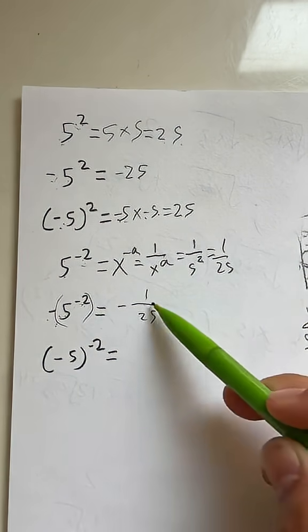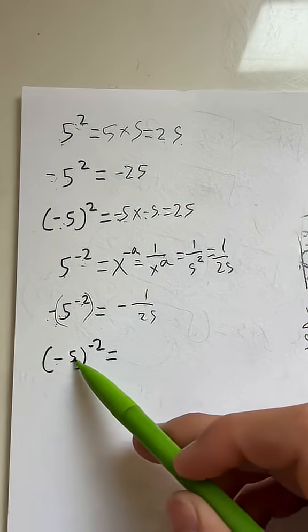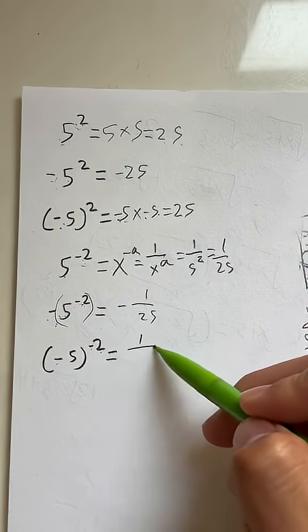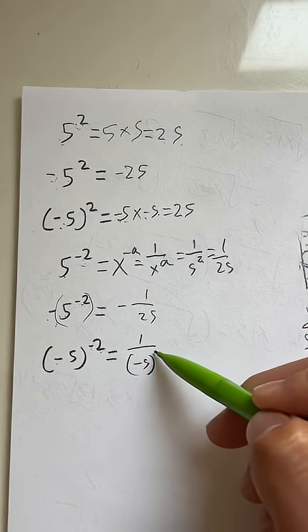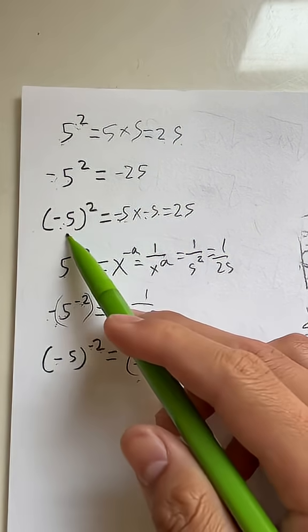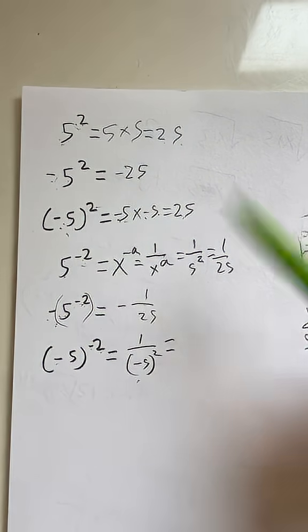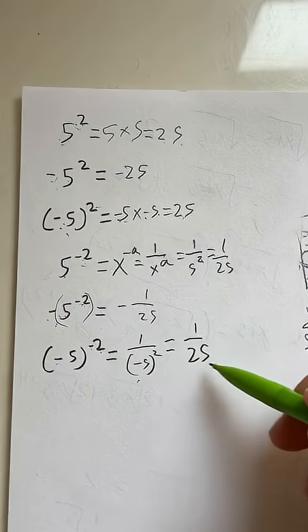And we put in negative 1 over 25. And lastly, negative 5 to the negative second is the same as 1 over negative 5 parentheses to the second power. And as we know from this one, negative 5 parentheses to the second power is equal to 25. Therefore, this is equal to 1 over 25.